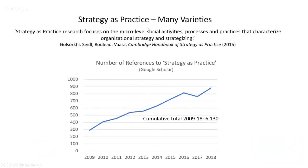I want to absolutely emphasize that Strategies Practice comes in many, many varieties. The Cambridge Handbook of Strategy as Practice, second edition from 2015, defines Strategy as Practice research as focusing on the micro-level social activities, processes and practices that characterize organizational strategy and strategizing. But the emphasis on practices as part of that definition also points to macro practices, which is one of the things I want to encourage further study of.